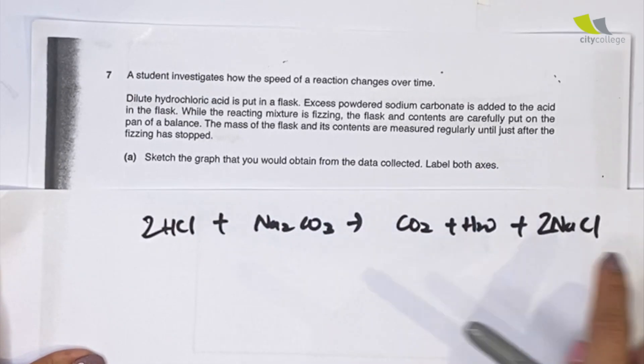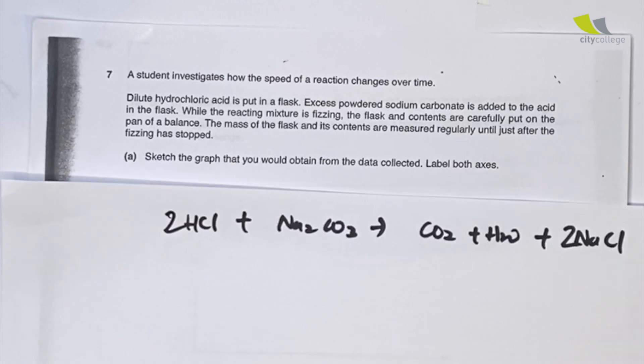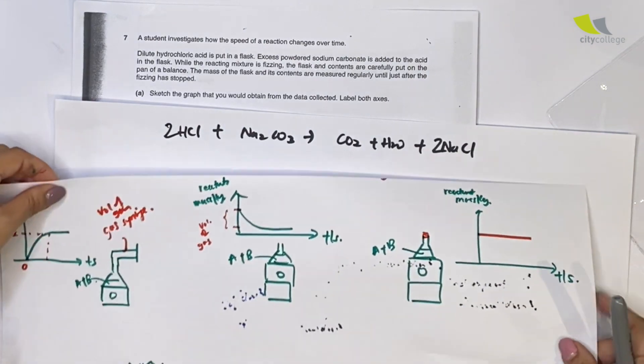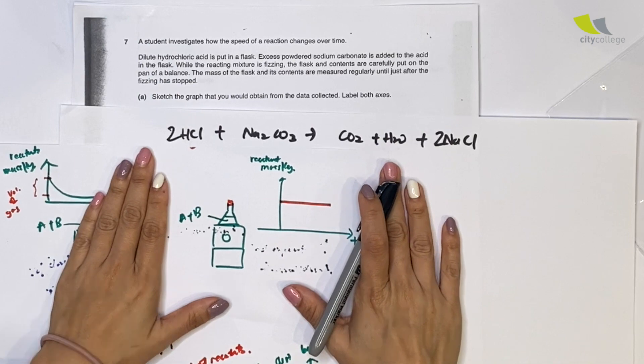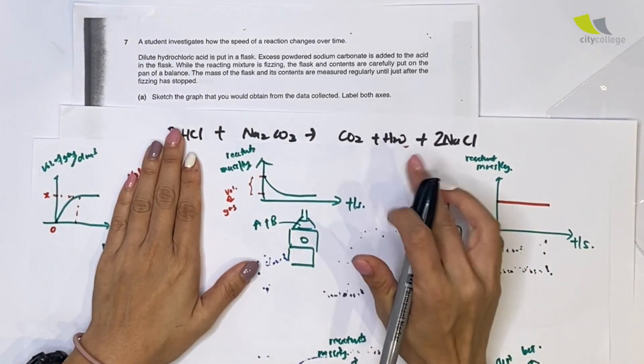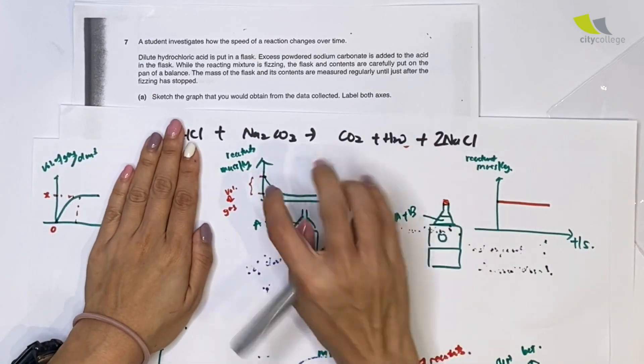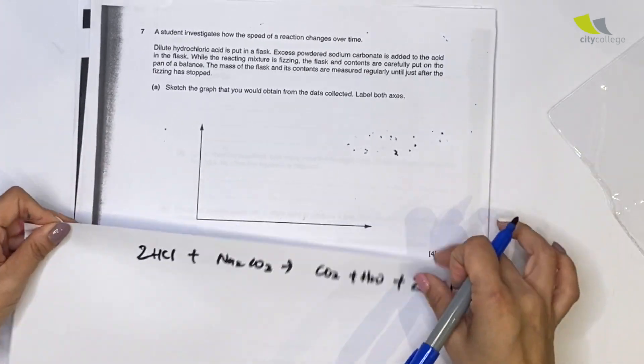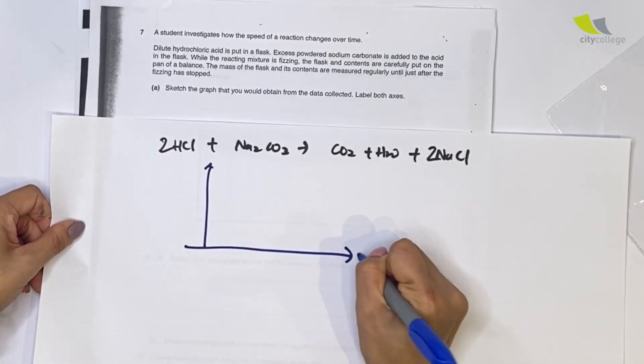They say sketch the graph that you'll obtain. Label both axes. You are measuring the flask similar to what I've shown you earlier regarding the graph. This is the one - if I stopper it, your graph will look like this. If I didn't stopper it, the graph will look like this one because there will be an escape of gas. In this reaction, CO2 will escape, so the graph that I'll be drawing will be this one.